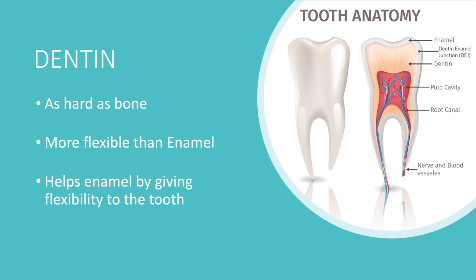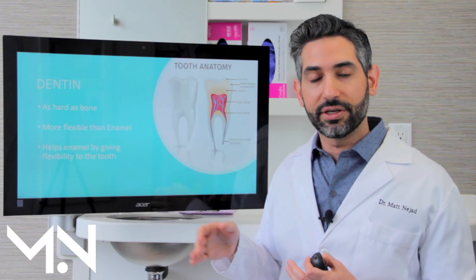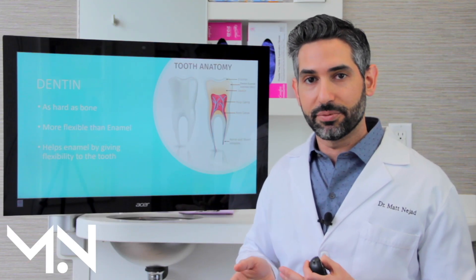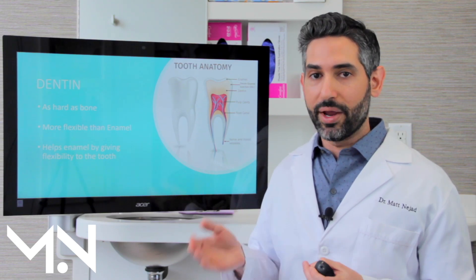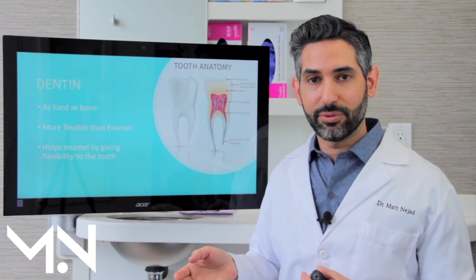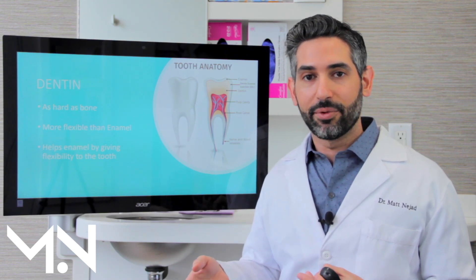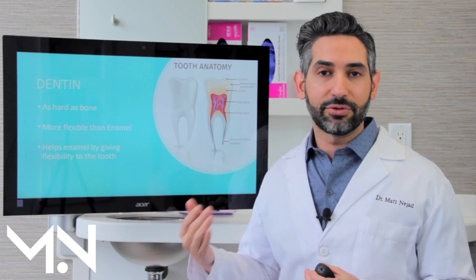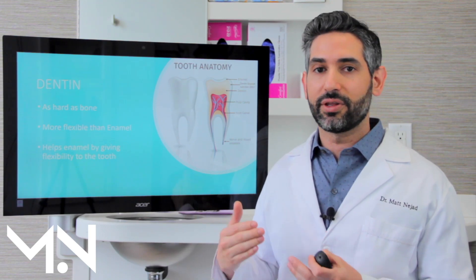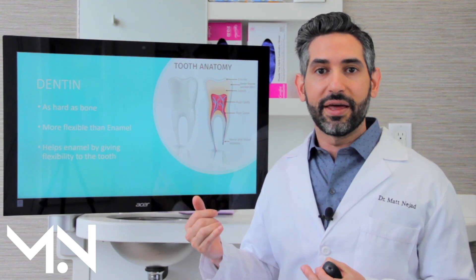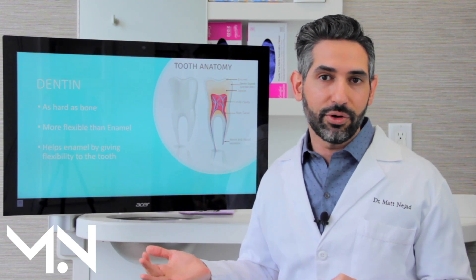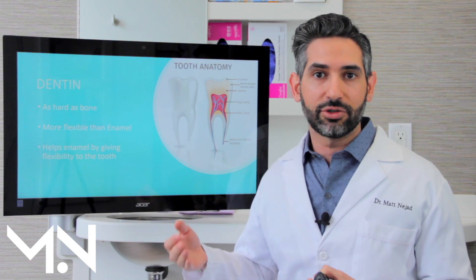Dentin is the layer that is under the enamel. While it's still really hard — about as hard as bone — it's relatively way more flexible than enamel is. And that's really important because if you had a tooth that was all enamel, it would be too hard, it would fracture and break.